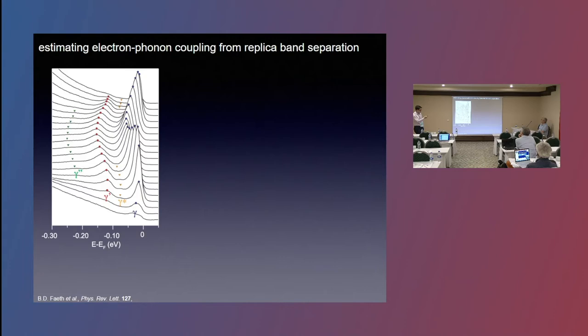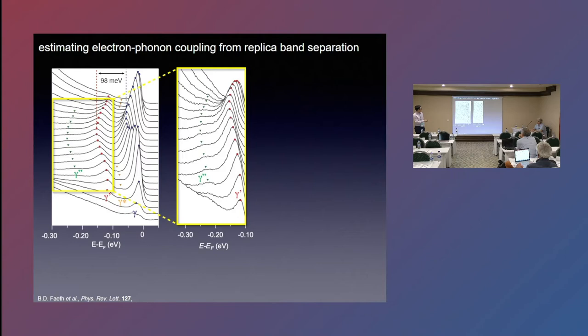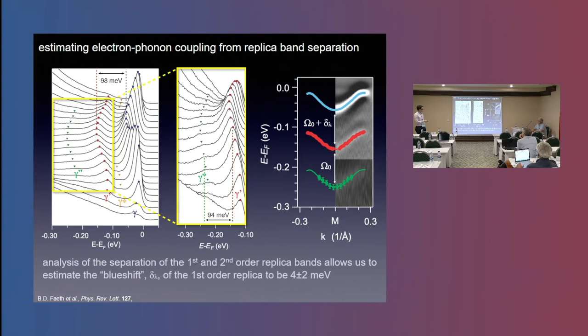We can actually analyze this data in a little more detail to try to extract out some more quantitative information. For instance, we can look at the energy separation. To first order, they should all be separated by integer multiples of the phonon frequency. But it turns out it's a little bit more subtle than that. If we look at the separation between the main band and this first replica, it's 98 MeV. But you can also see there's actually a separate feature. We can actually identify a second replica, which is quite faint. If you look carefully, you can see this extra bump here. That turns out to be separated by about 94 MeV. It turns out that actually in more sophisticated theories of the electron-phonon coupling, they actually predict that you get a slight blue shift of this first separation. So we extract this to be about 4 MeV. And so we can use this to try to compare this with theory calculations to extract out a value, a quantitative value for the electron-phonon coupling constant.